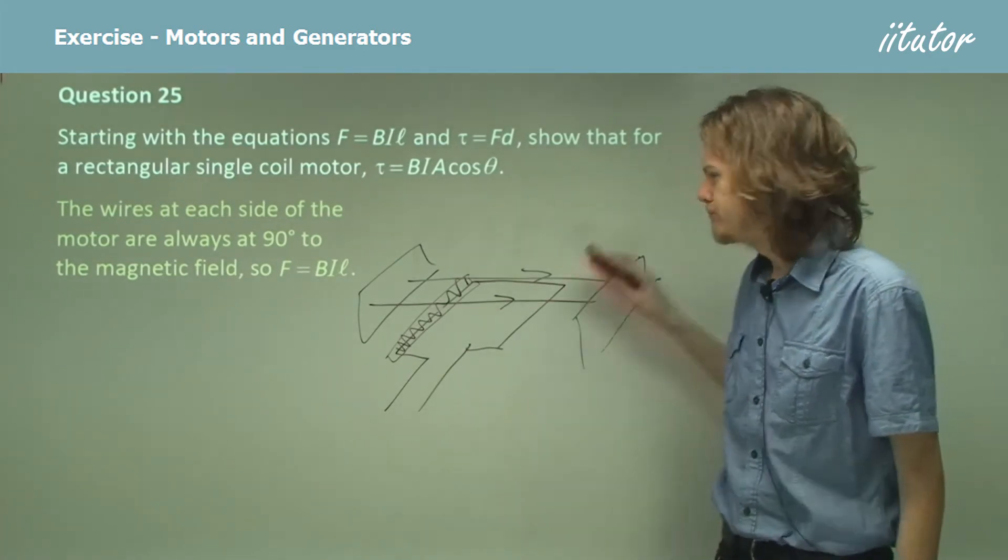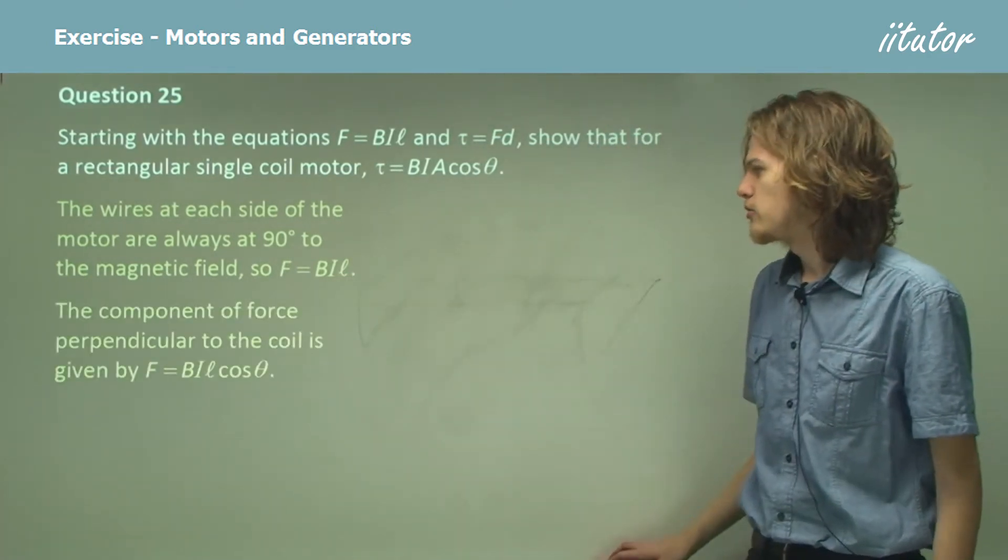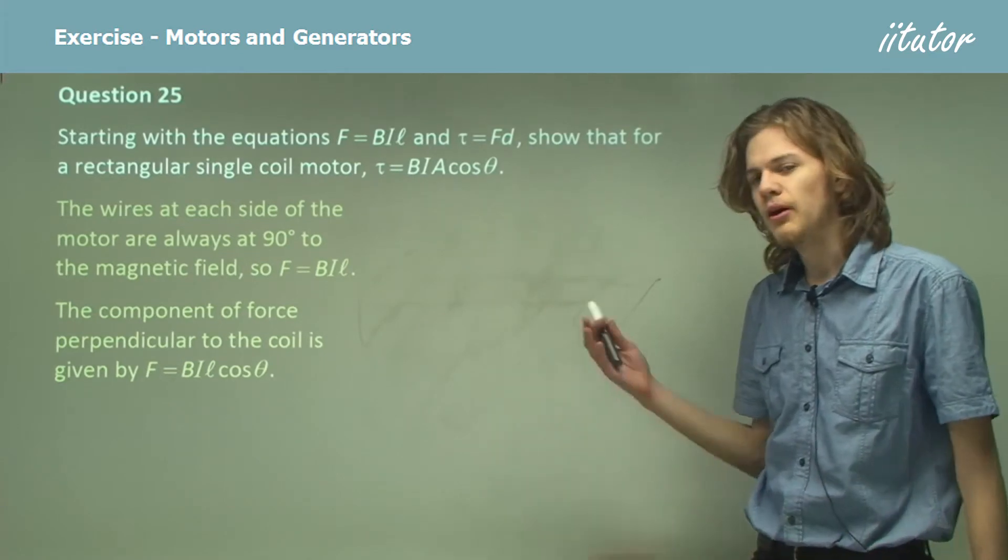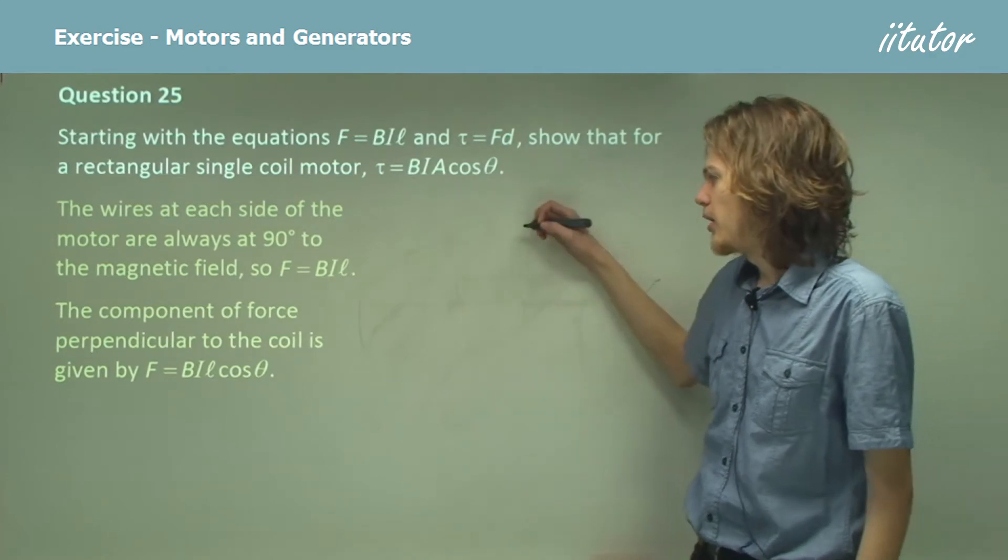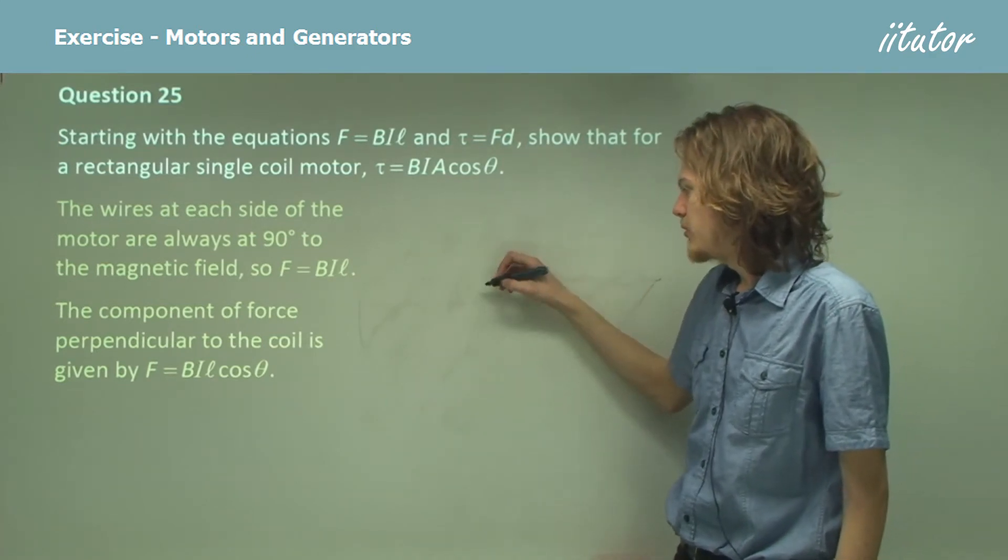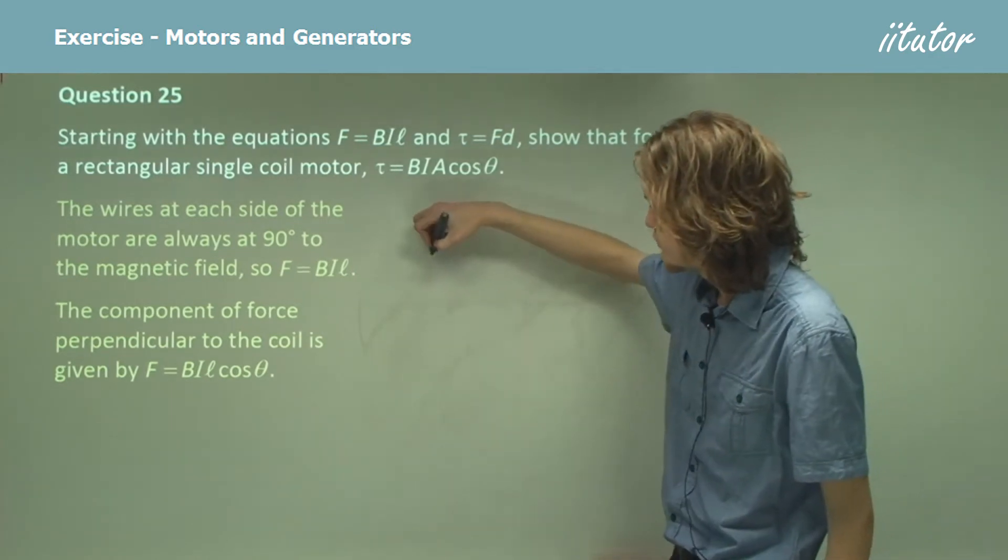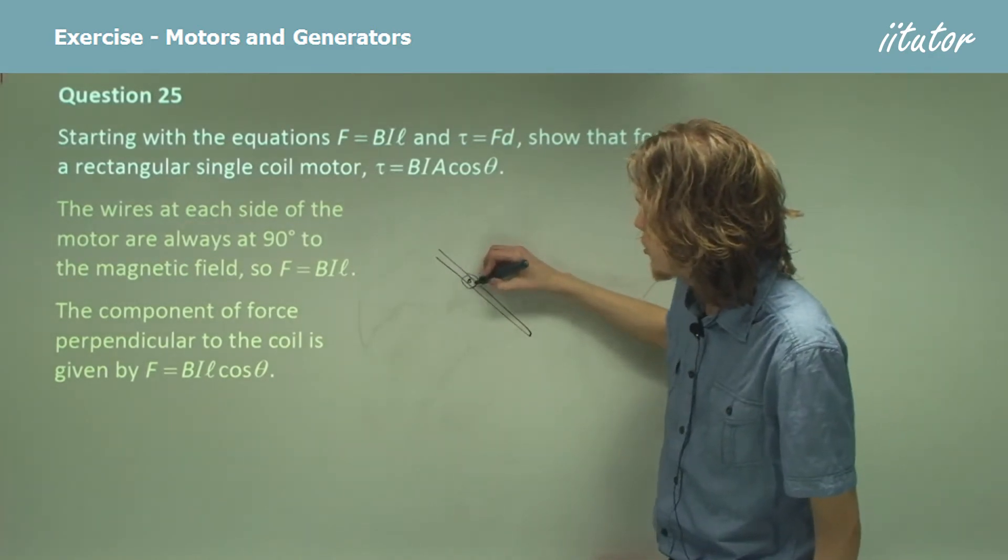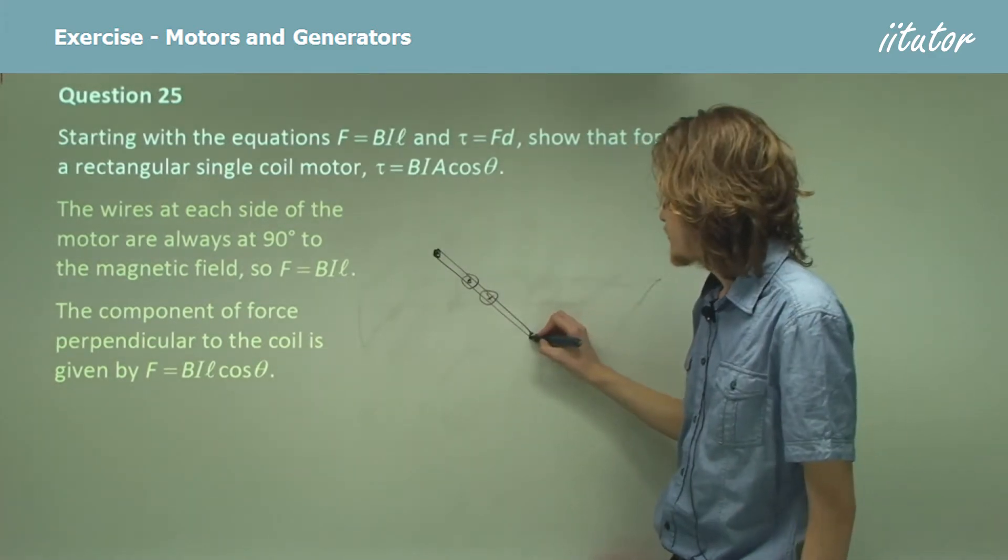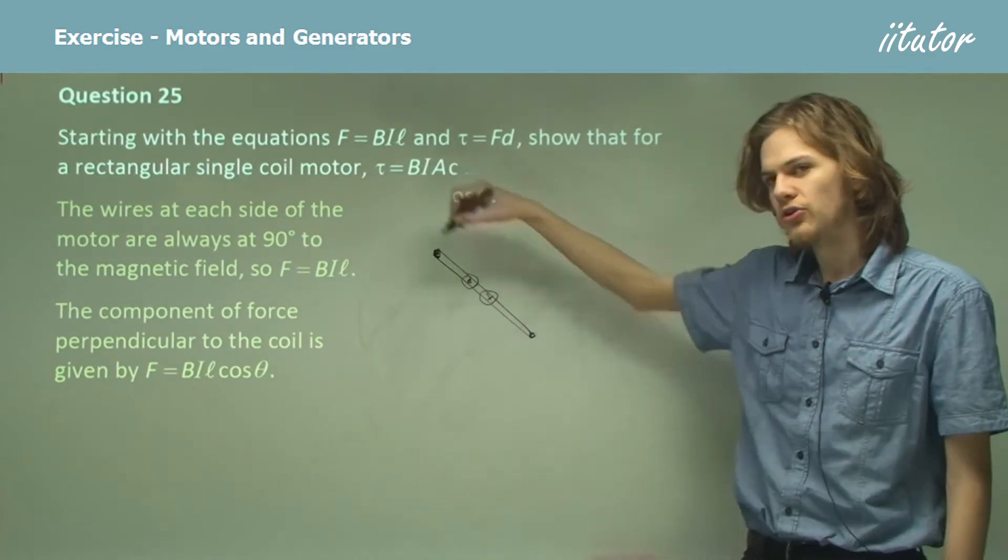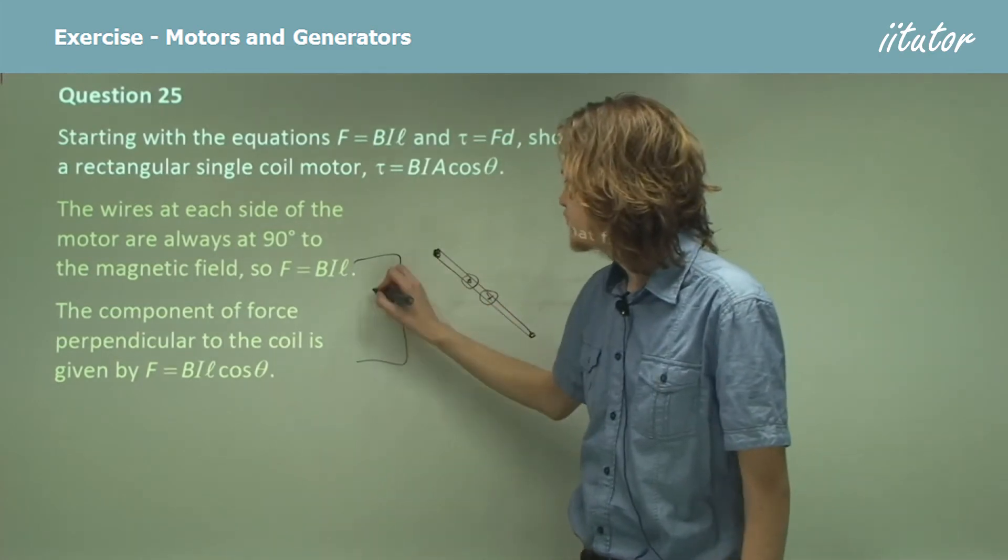All right, with me so far? So a component of force perpendicular to the coil is given by F equals BIL cosine theta. In this case, if we look at the coil sort of from the side, with one current coming in and one current going out, we're looking at the end points of the coil, because those will be what are in between the magnetic fields.